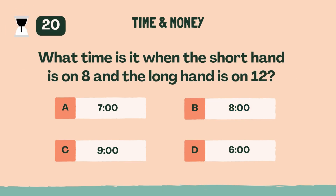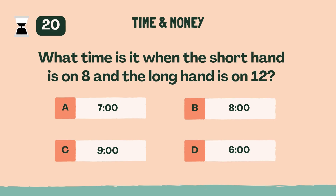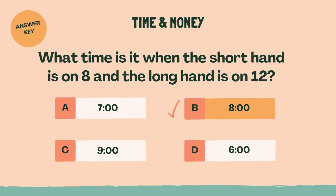What time is it when the short hand is on 8 and the long hand is on 12? B, 8 o'clock.